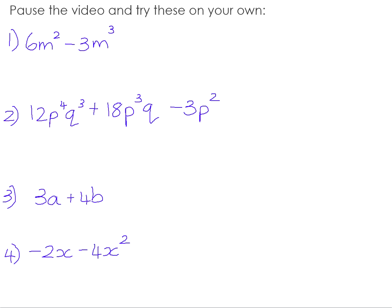In your homework book there are examples to try on your own. For Question 1, the factors of 6m squared and 3m cubed: the highest common numeric factor is 3, m is common to both terms, and the highest power of m common to both is m squared. So 3m squared times 2 gives 6m squared, and 3m squared times negative m gives negative 3m cubed.